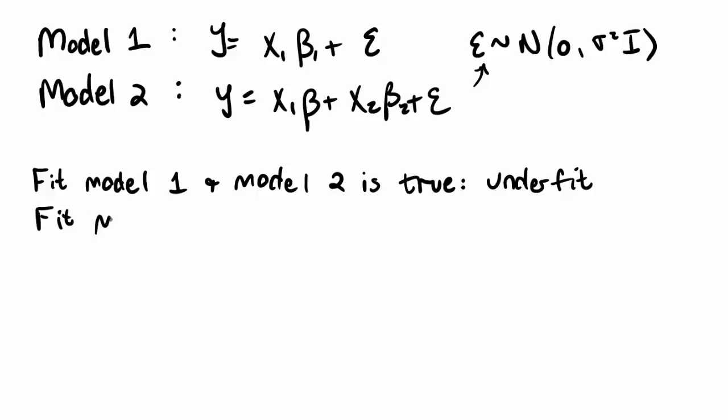If on the other hand we fit model 2 and model 1 is true, then we've overfit the model. And there has to be some consequences for doing that. In that case when we overfit, we've included the x2 covariates when in fact we didn't need to.